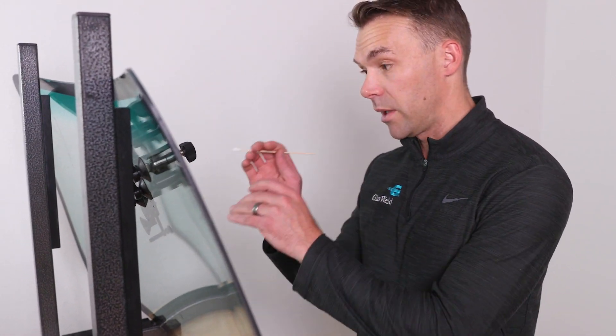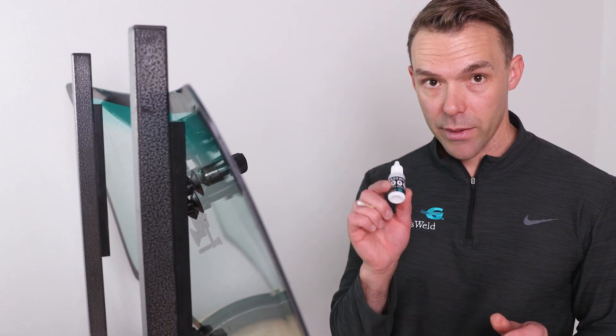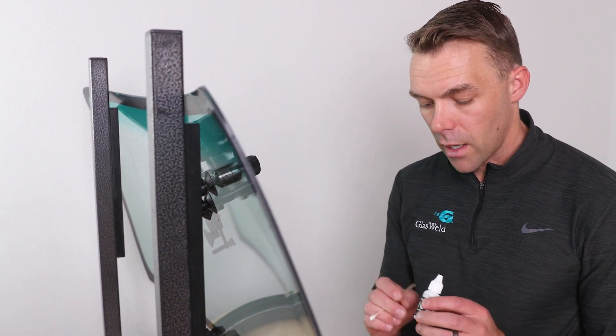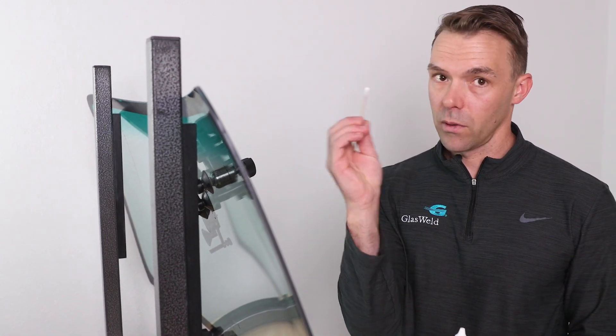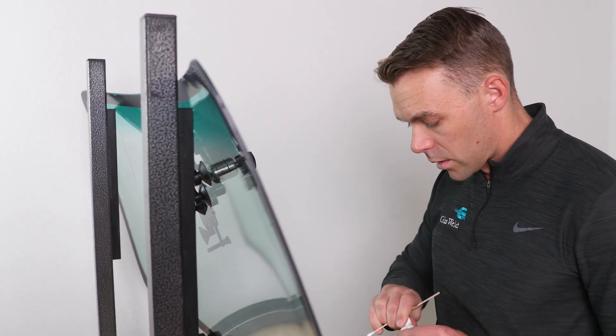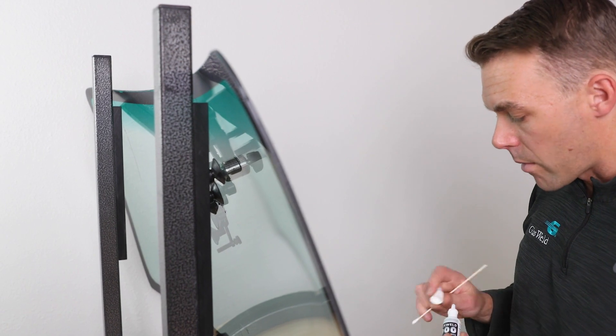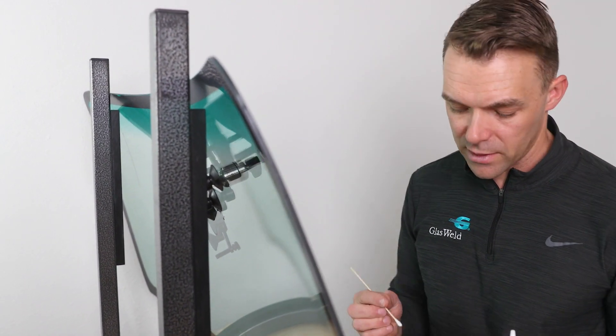So let's talk about how we're going to start the wicking method now. So because we're at the beginning of the crack, we're going to start with our Crackwell 1000, make sure it's nice and shook up, and then we're just going to take a q-tip. So any type of q-tip is fine.